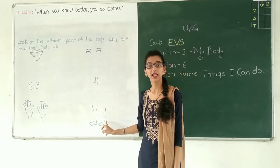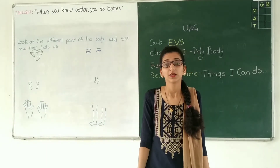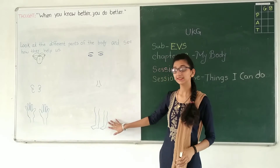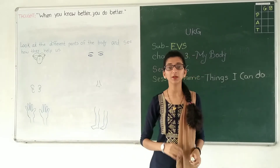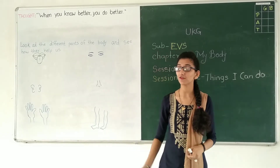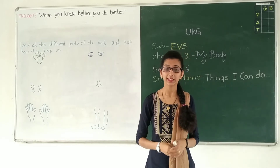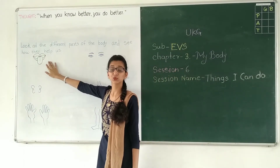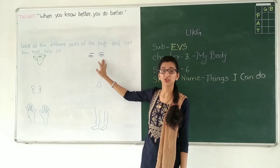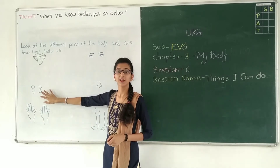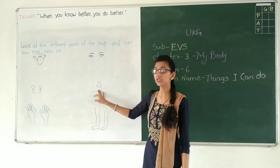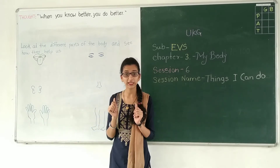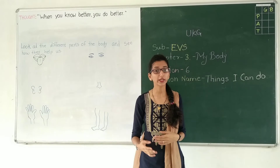Now last is our leg. Now tell me, did you like running? Yes. Now look at this last one — this is our leg. What is the use of our leg? Running, walking. Yes! Very good. Now look at this again: our tongue helps us to taste, our eyes help us to see, our ears help us to hear, our nose helps us to smell, our hands help us to feel, and our legs help us to walk and run.